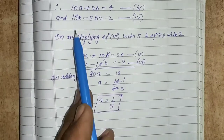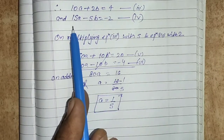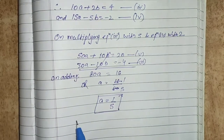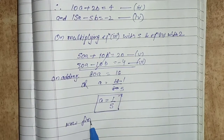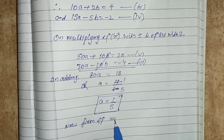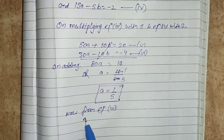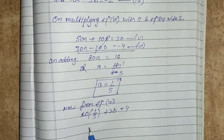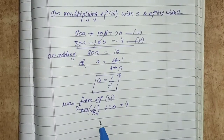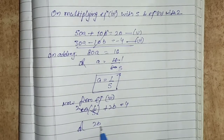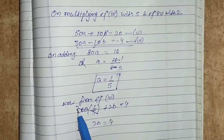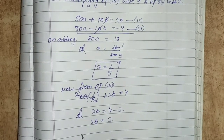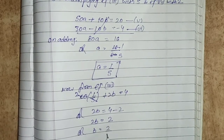Now substituting a equals 1 by 5 into equation 3: 10 into 1 by 5 plus 2b equals to 4. So 2 plus 2b equals to 4, giving 2b equals to 4 minus 2 equals 2. Therefore b equals to 2 upon 2, which is 1.